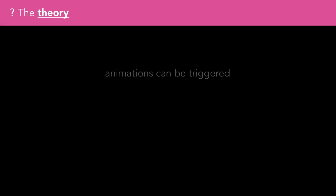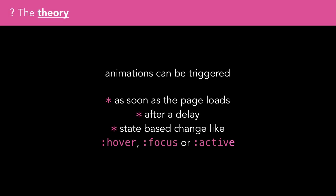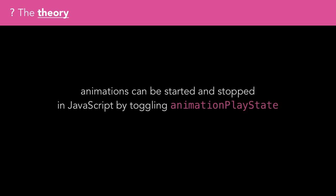Animations can be triggered in CSS as soon as the page loads, after a delay, or via some kind of state-based change like hover, focus, or active, which we looked at in episode 8. CSS animations can also be started and stopped in JavaScript by toggling the animation-play-state property.